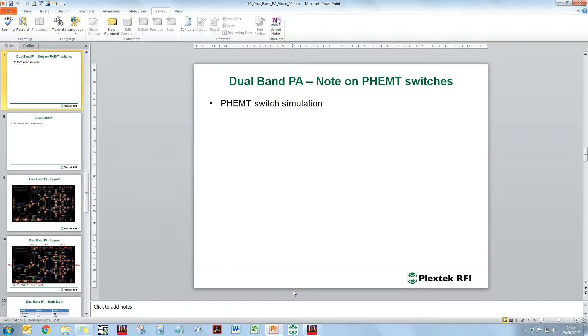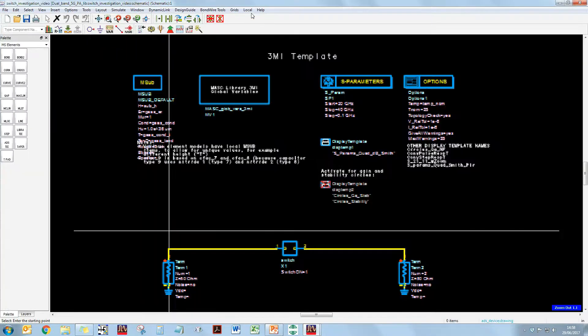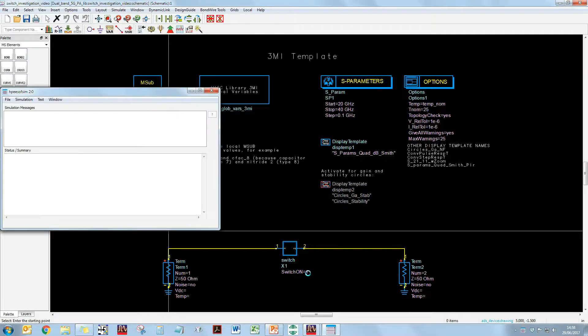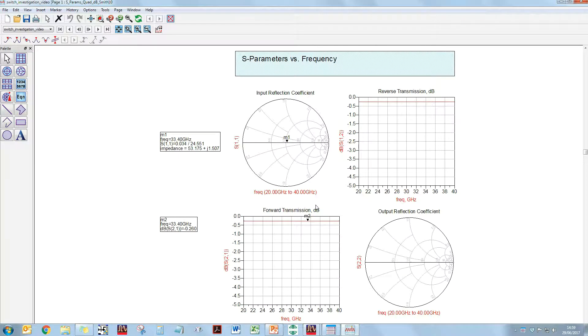I'll now demonstrate a simple switch using ADS. OK, so here we have a half millimetre PHEMP device. And I can conveniently switch between being zero volts VGS or on and reverse bias using this variable here. So, at the moment, it's going to be switched on, zero volts VDS. Let's simulate this and see what the S-parameters look like.